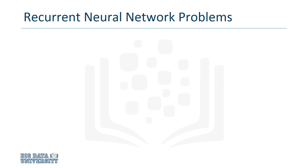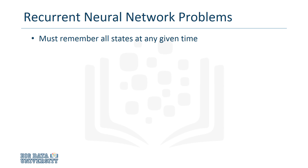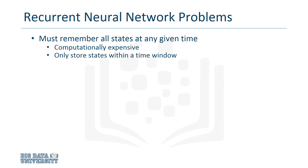Despite all its strengths, the recurrent neural network is not a perfect model. One issue is that the network needs to keep track of the states at any given time. There could be many units of data or many time steps, so this becomes computationally expensive. One compromise is to only store a portion of the recent states in a time window.